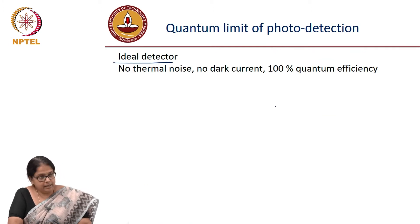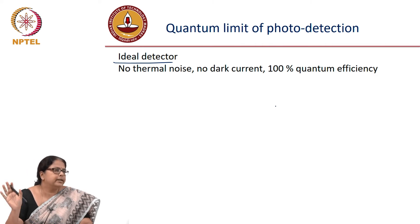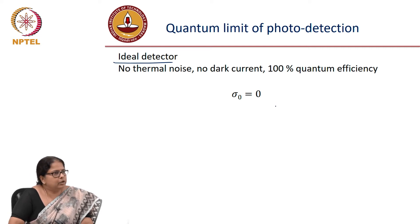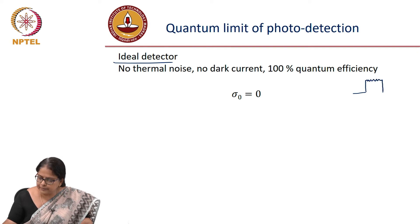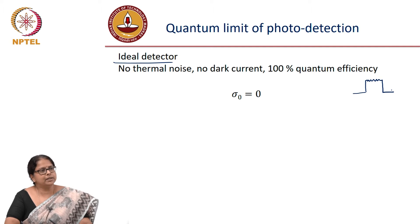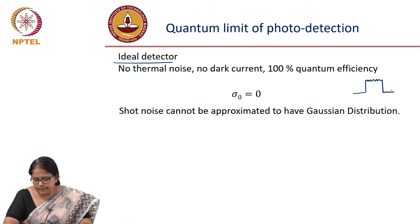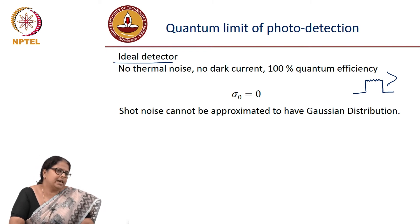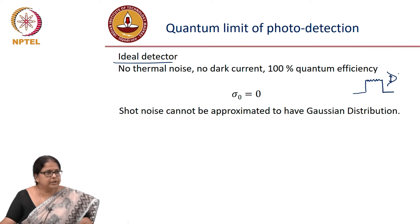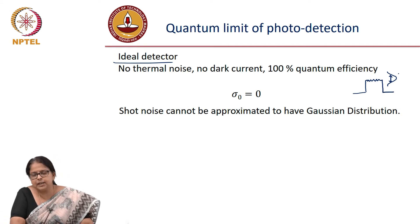This is again a PD with 100 percent quantum efficiency and no multiplication factor, which means sigma naught is zero because there is no thermal noise. When you send a zero, you get a clean zero current. When the signal is high, you have noise due to shot noise. Now, can I do a Gaussian distribution? In principle you cannot, because Gaussian is true only if it is thermal noise limited — it is not true when shot noise limited.